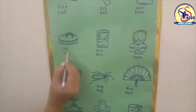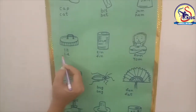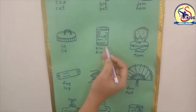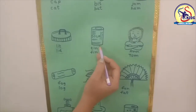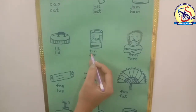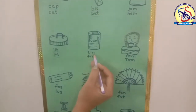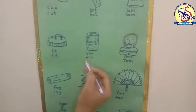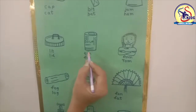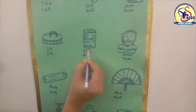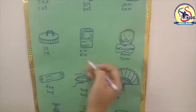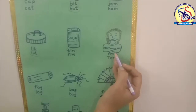The correct word is lid, so circle the word lid. Our next picture is a tin. This is a tin. Our first word is T-I-N, tin, or F-I-N, fin. The correct word is T-I-N, tin, and we have to circle this word.